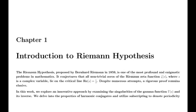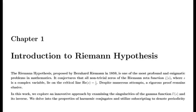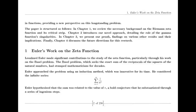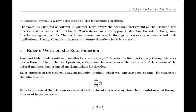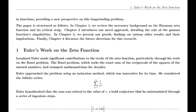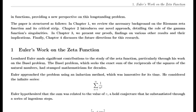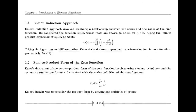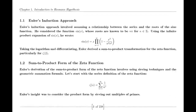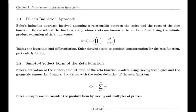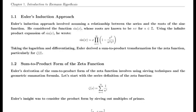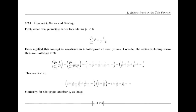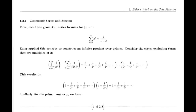Jacobi Theta function. Riemann also made use of the Jacobi Theta function, which has significant applications in various areas of mathematics. The theta function's series representation and modular properties were instrumental in Riemann's derivation of the functional equation for the zeta function. This equation is crucial for understanding the zeta function's behavior across the complex plane.